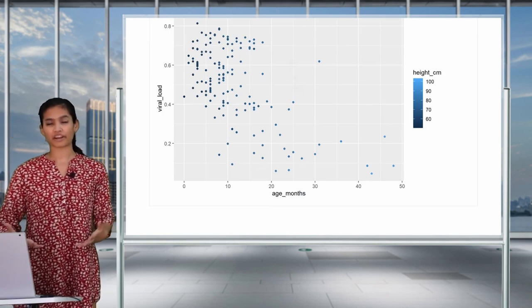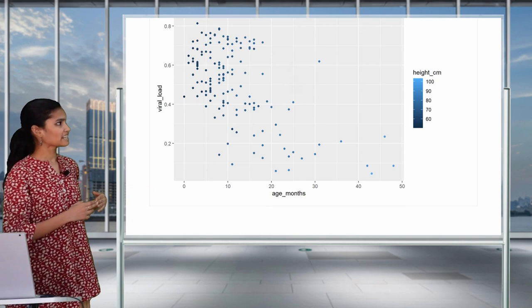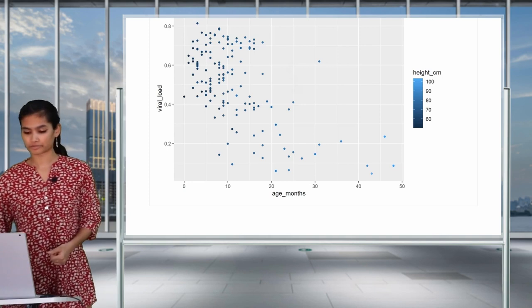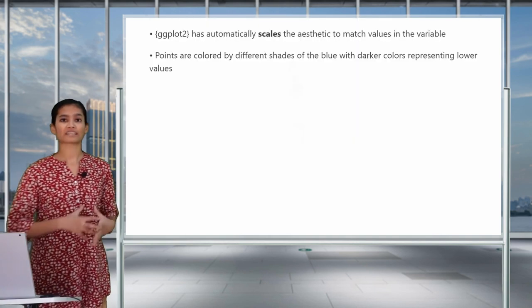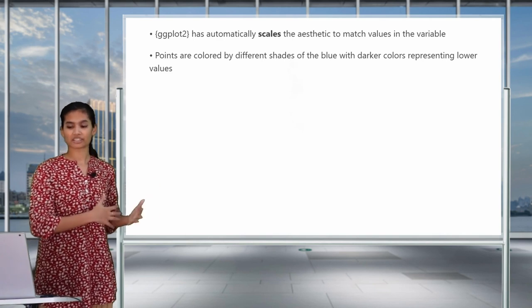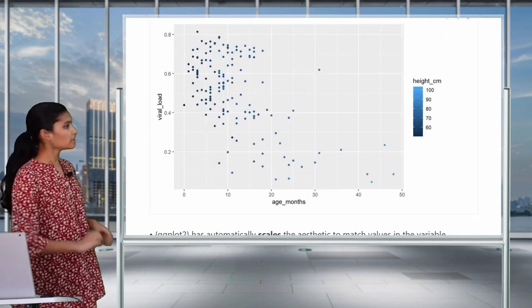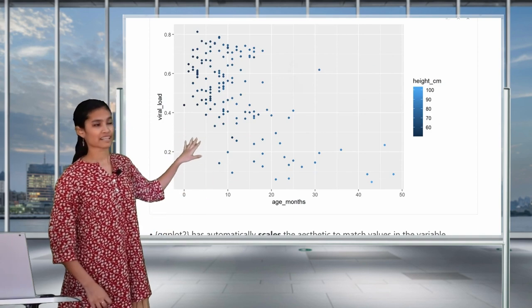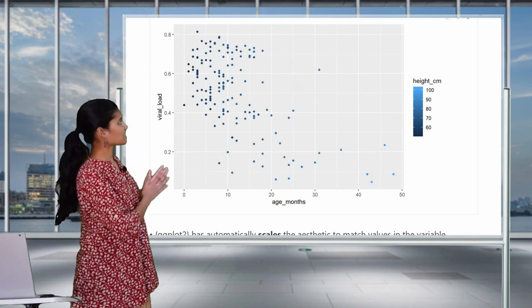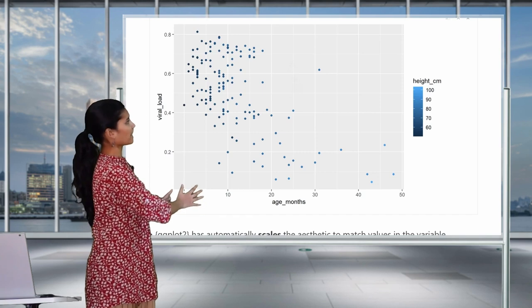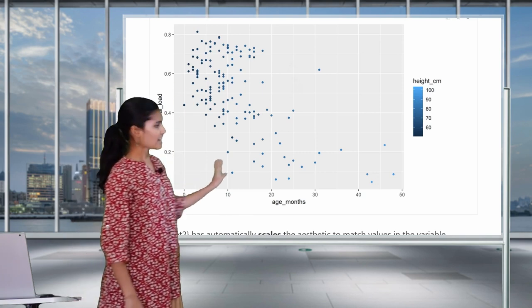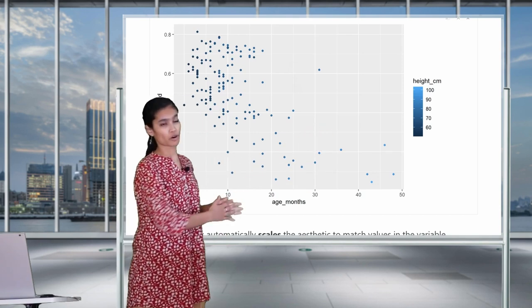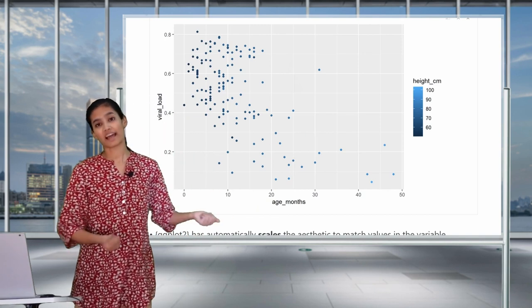So now I've removed the color equals heightcm from ggplot, and I'm going to add mapping to geom_point. Now you can see that mapping appears within geom_point with color equals heightcm, and we get the same plot. But it matters that the color mapping belongs to the geom_point layer and not the main aesthetic mappings in ggplot. When we assign a continuous variable to the color aesthetic, what we get is a color gradient scaled by the values of that continuous variable. ggplot has scaled the colors to match the values of heightcm — points are different shades of blue, with darker colors representing smaller numbers.